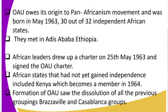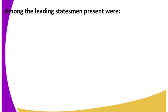The formation of the OAU led to the dissolution of all previous groupings — the Brazzaville and Casablanca groups. These were the Pan-Africanist movements that existed in the diaspora. Now, who were the leading statesmen at the main 1963 conference for the Organization of African Unity?